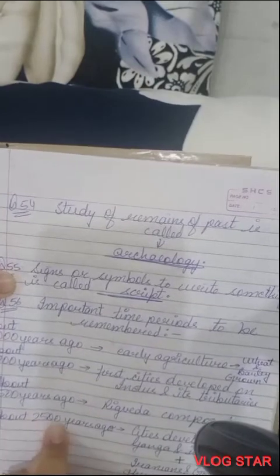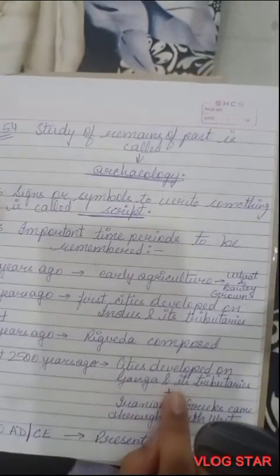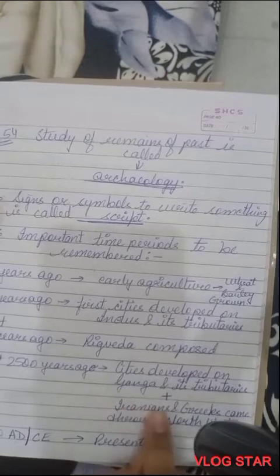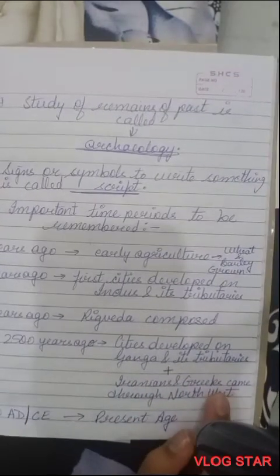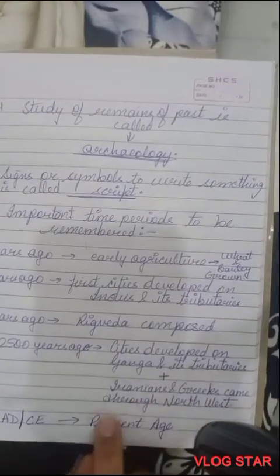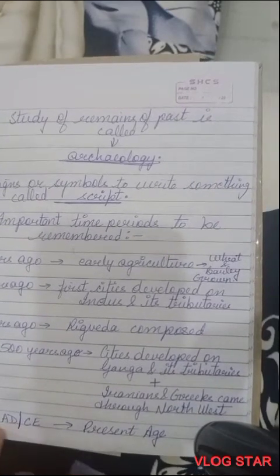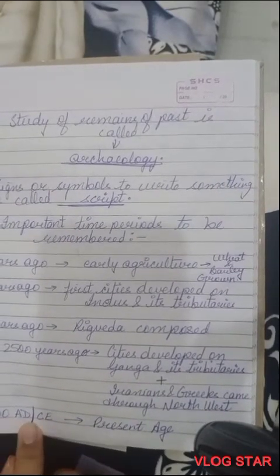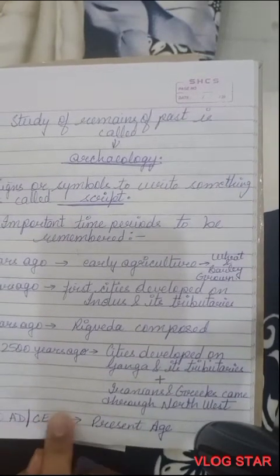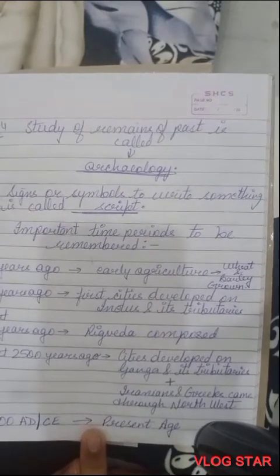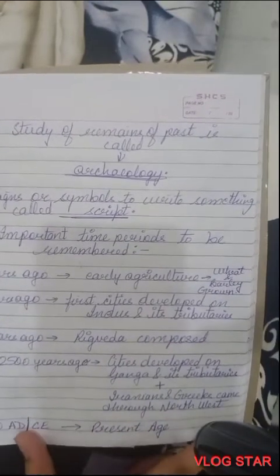Important time periods to remember: about 8000 years ago — early agriculture, wheat and barley grown. About 4700 years ago — first cities developed on Indus and its tributaries. About 3500 years ago — Rigveda composed. About 2500 years ago — cities developed on Ganga and its tributaries, and Iranians and Greeks came through the northwest. 2000 AD or CE is the present age.